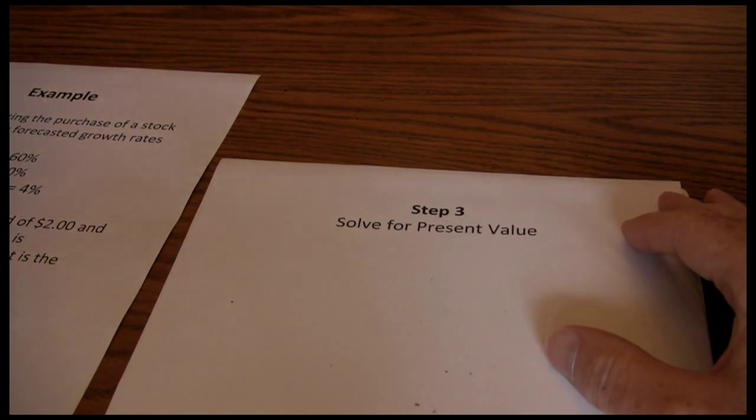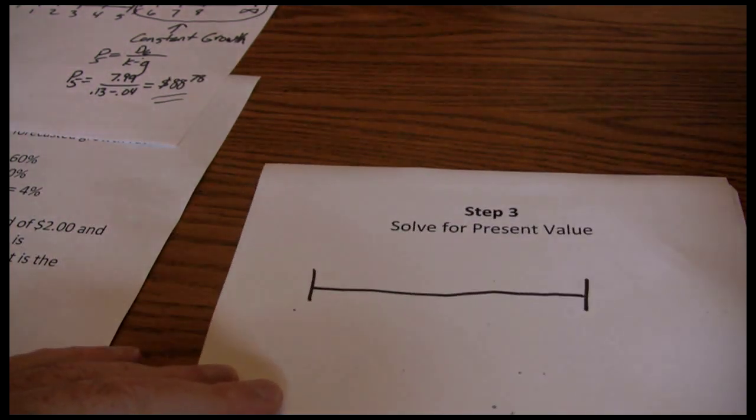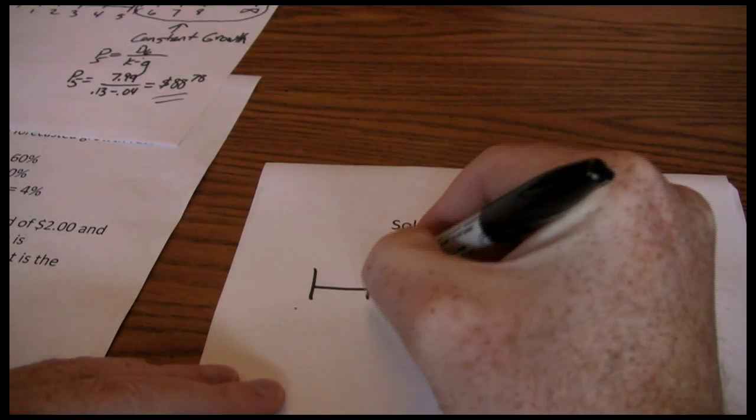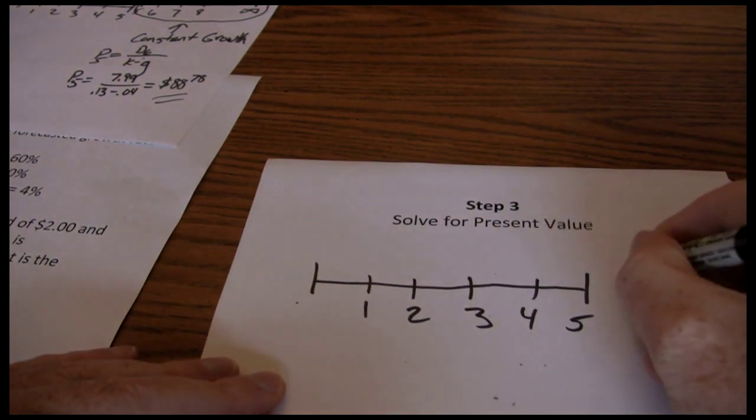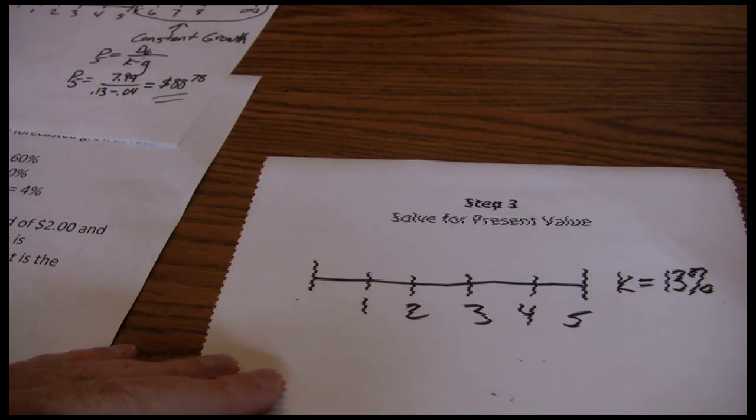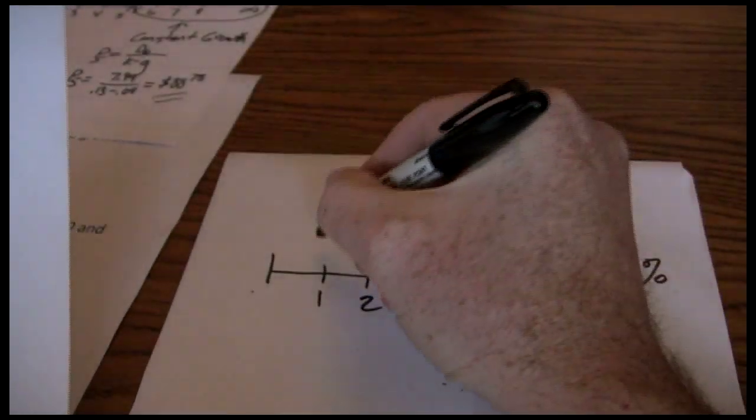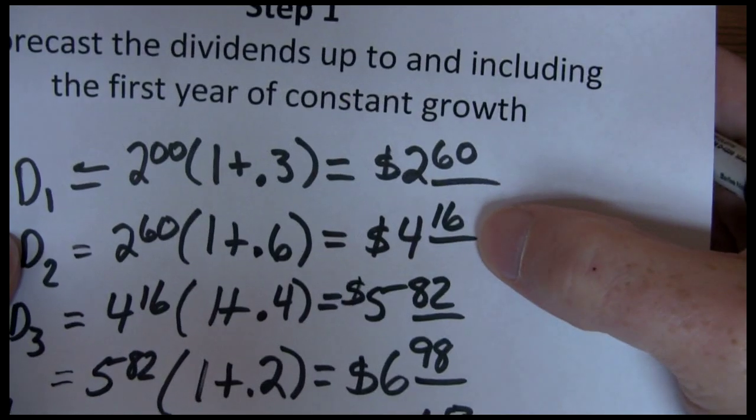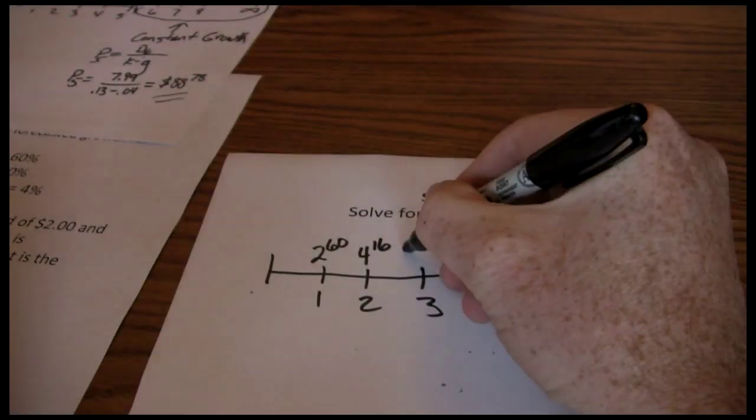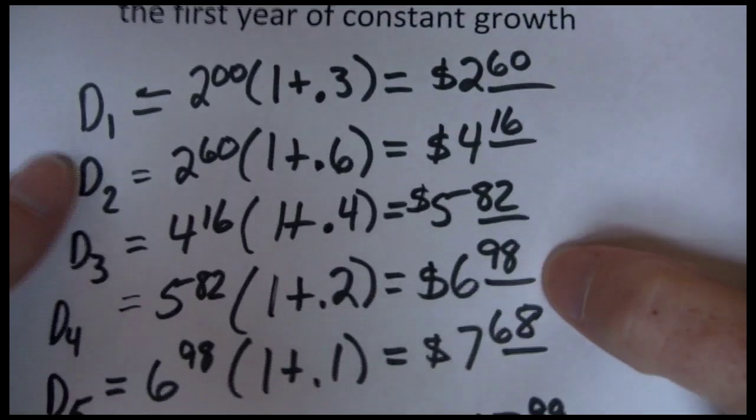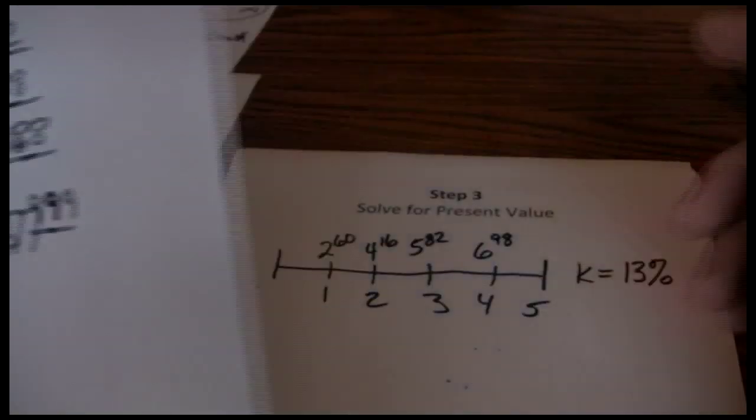Now we're going to put those together and look at the timeline. We've changed our infinite timeline down to a five-year timeline. We have five years, our required return is 13%. Our dividend in year one was $2.60, year two is $4.16, year three was $5.82, and year four was $6.98.